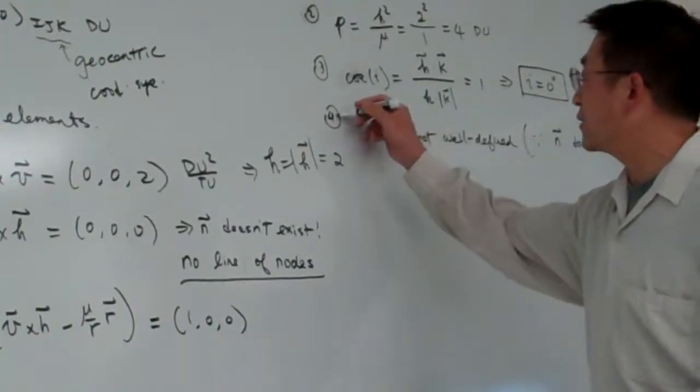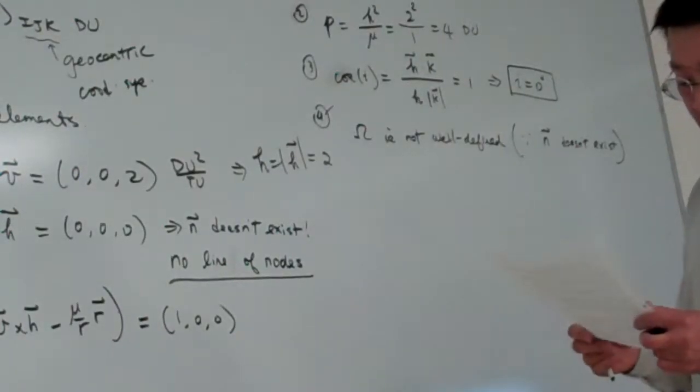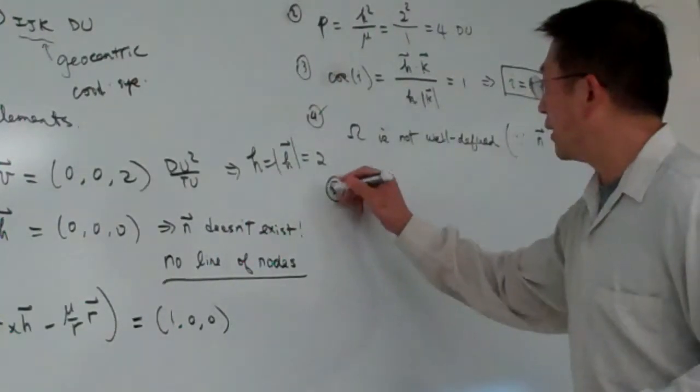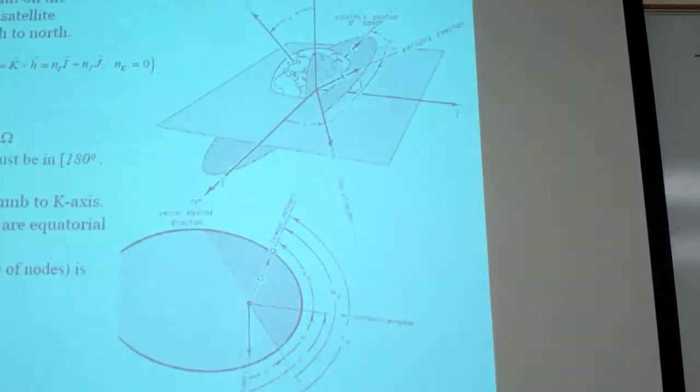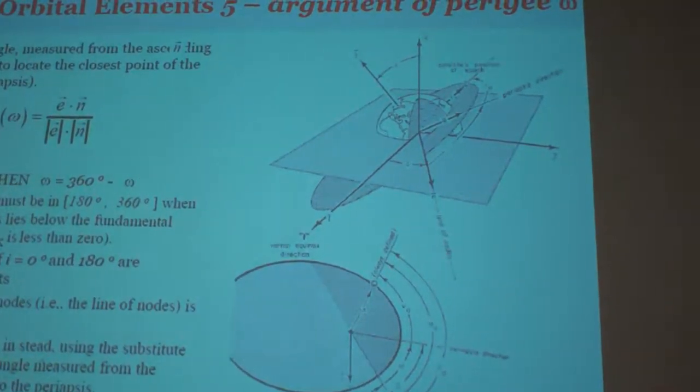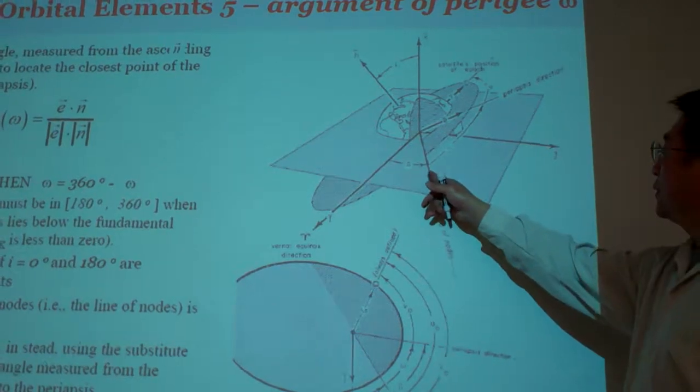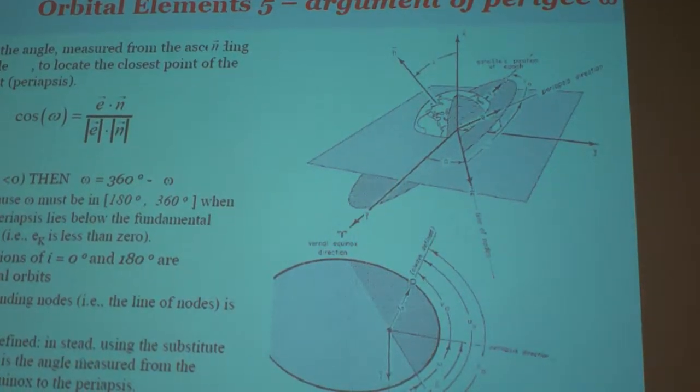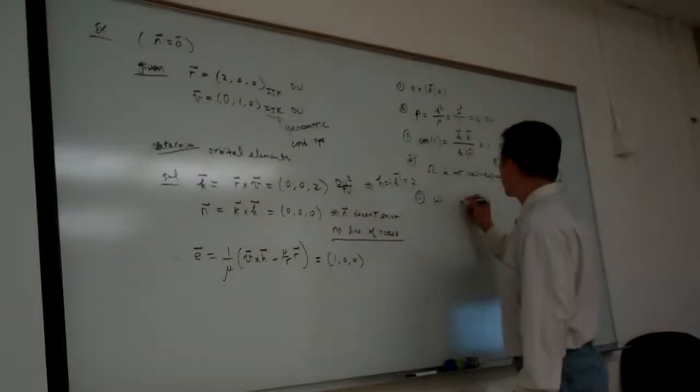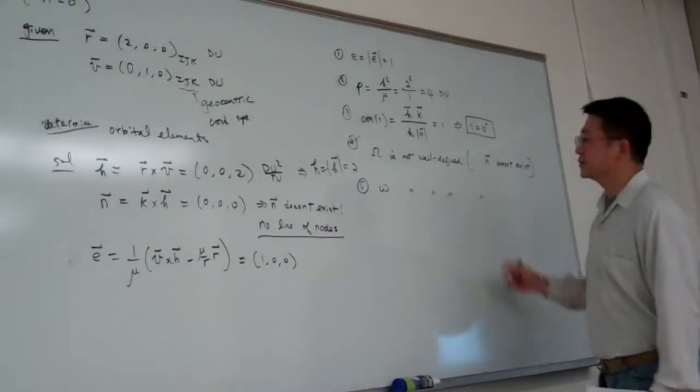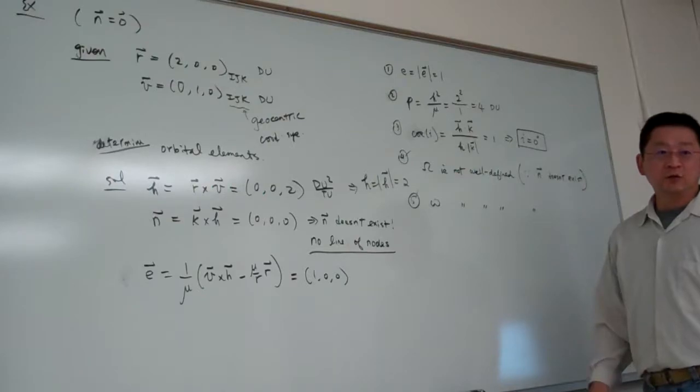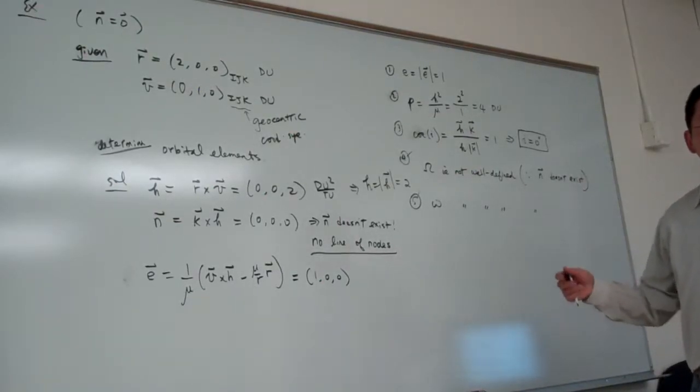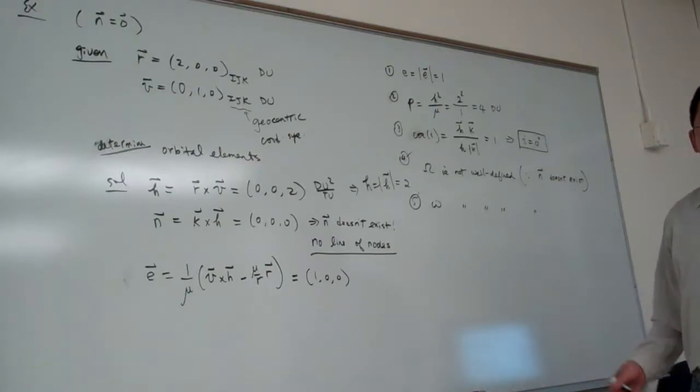Because the n does not exist. Okay. So since we lack one component, we will see what happens. Then, for the fifth one, we want to determine lowercase omega. And again, omega is determining the angle from n to e. But again, the n doesn't exist. So omega is not well-defined as well. So for the same reasons. So this one, I put a check here. That's the one that doesn't exist. So we need to use the other two elements to fill in this kind of defined properties.